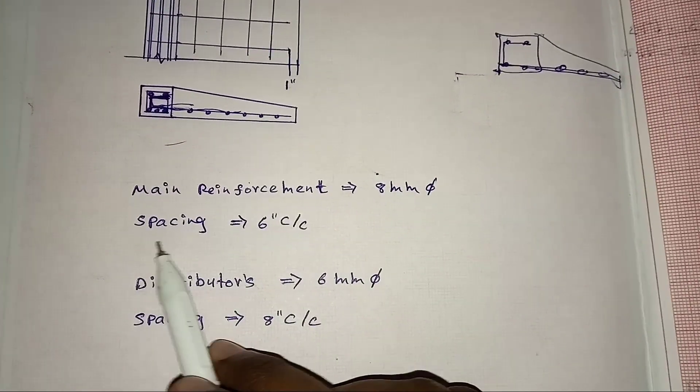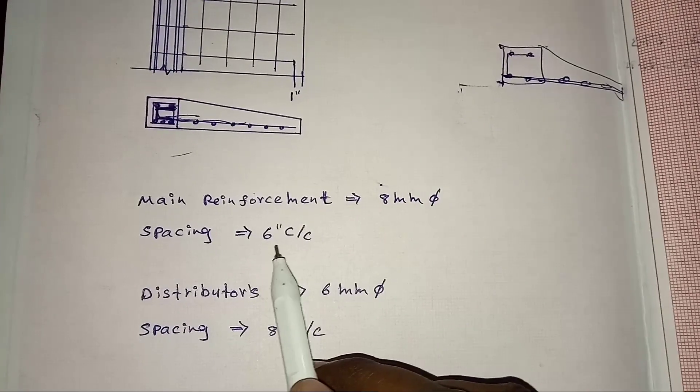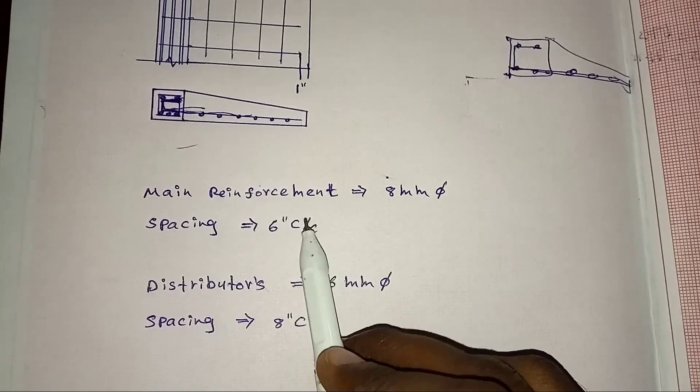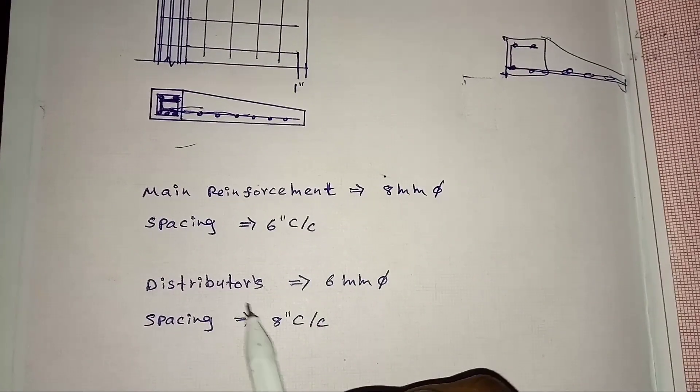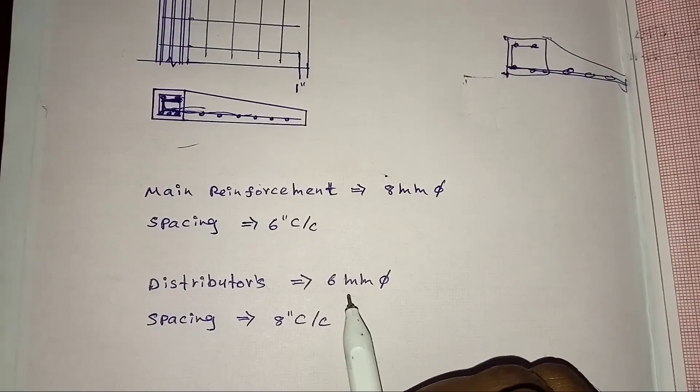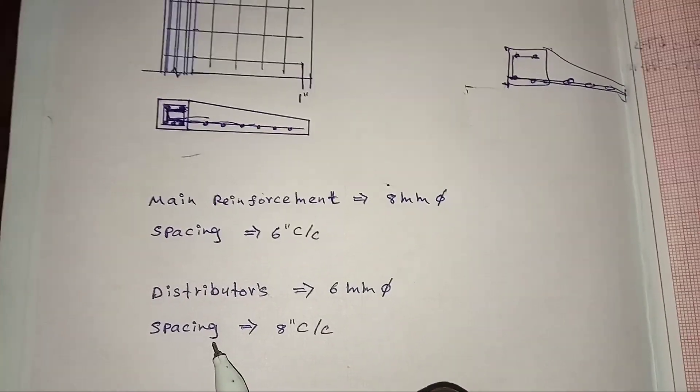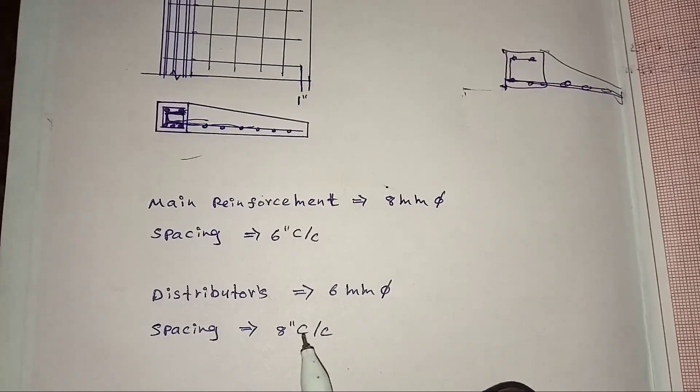Which main reinforcement will have the same, six inches from center. You use the main reinforcement and spacing is eight inches from center.